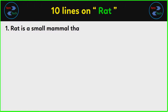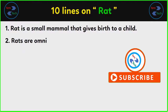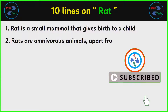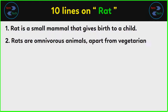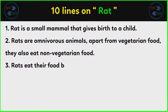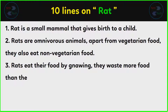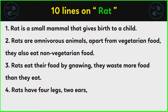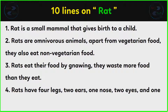Rat is a small mammal that gives birth to live young. Rats are omnivorous animals — apart from vegetarian food, they also eat non-vegetarian food. Rats eat their food by gnawing; they waste more food than they eat. Rats have four legs, two ears, one nose, two eyes, and one tail.